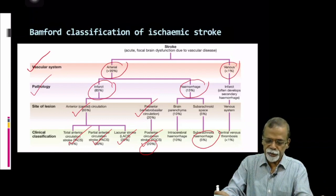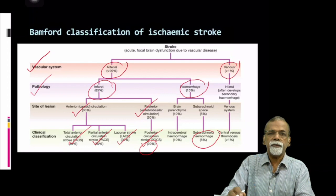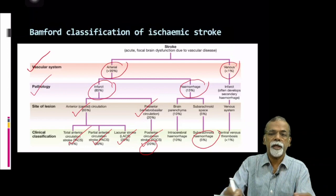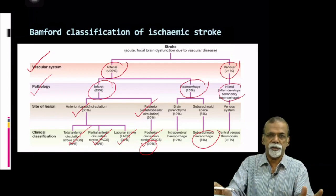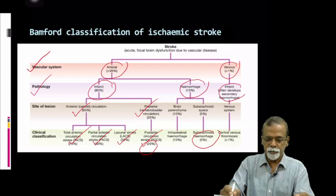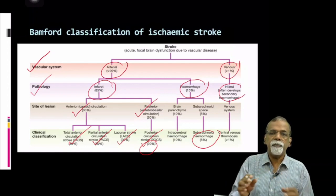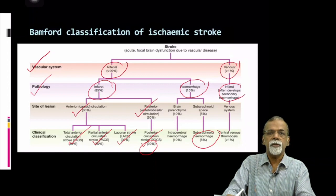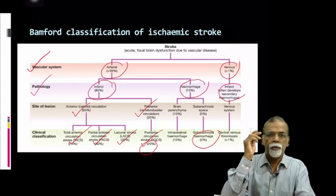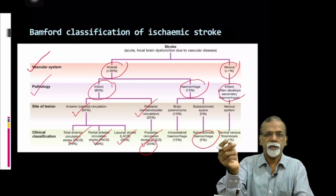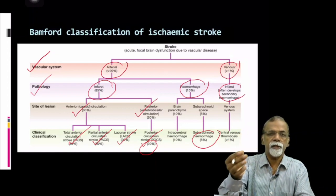When you take venous infarct or venous thrombosis, one peculiarity is that venous thrombosis producing ischemia leads on to hemorrhagic transformation. So this is usually a hemorrhagic venous thrombosis — that is important to remember. Only 1% of strokes are due to venous infarct. The postpartum period is a very important period where you can get cerebral venous thrombosis. Otitis media can cause venous sinus thrombosis, and a thrombophilic state can also cause venous thrombosis.